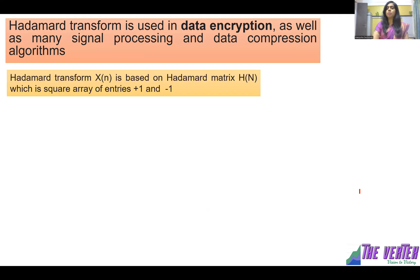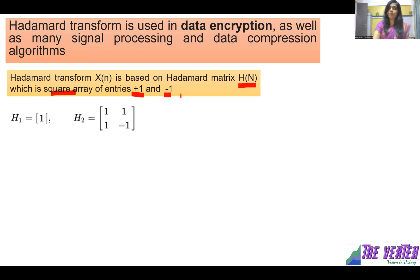Hadamard transform is based on the Hadamard matrix, which is denoted by H of N. H of N is a square array in which the entries are only +1 and -1. H1 is a matrix of unit 1. H2 is a 2x2 matrix: 1, 1, 1, -1.